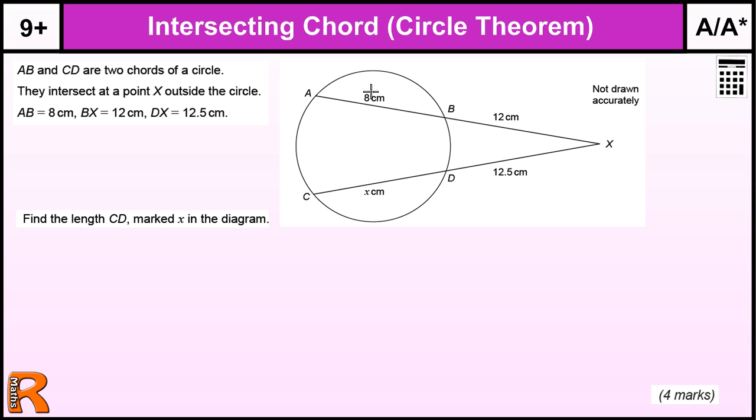The rule for this is the distance from A to X times the distance from B to X. The general idea of the rule is the distance from any point on the circumference to the point where the two chords cross times by the other side of the chord where they cross is equal to the same thing on the other chord, so C to X times by D to X.